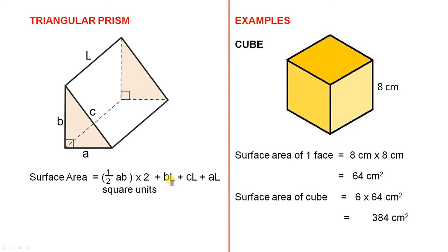Plus BL. BL is this part here at the back, plus CL, CL is this slanted face here, plus AL. Now AL is the base. So that base there is A times L. So if you add all those up, the answer will be in square units.